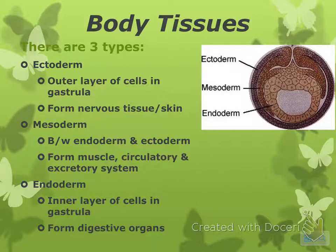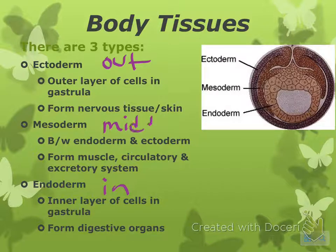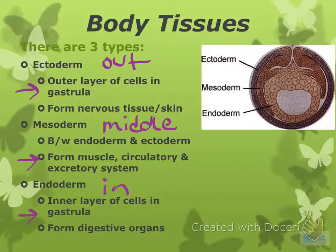So three types of body tissues. We have ectoderm — ecto means out — endoderm, which is in, and mesoderm, which is middle. The ectoderm is the outer layer and eventually forms the nervous system. The mesoderm — the middle layer — forms muscle, circulatory, and excretory systems. And the endoderm forms your digestive system. Think about your own body: your skin on the outside is your ectoderm, your muscles over top are your mesoderm, and your stomach organs underneath are your endoderm.